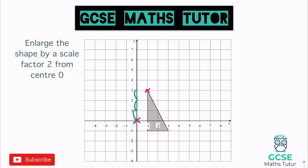Let's pick a different point just to vary it — the closest one. To get to that point it's one down and one across to the right. For a scale factor of two we double that, so we go two down and two across. Back at the center of enlargement, we go one, two down and one, two across — landing just there. That's the bottom left corner, so I just need to redraw the triangle twice as big from that point.